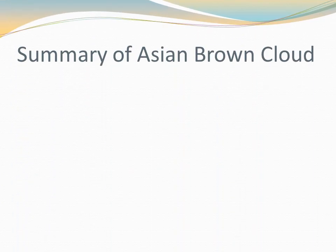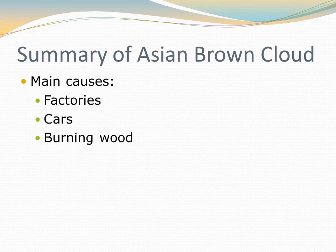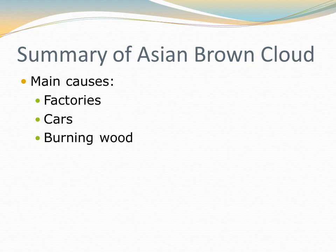We're back. In summary, Asian Brown Cloud is caused by three things: factories — all this economic progress means more production, and those factories are putting out pollution; cars — as more people join the middle class and earn money, more people are driving cars; and burning wood. An awful lot of people in Asia, millions of people, are still using wood-burning stoves or wood fires to cook their food, and all that wood produces a lot of pollution — not to mention wood burned from forest fires.